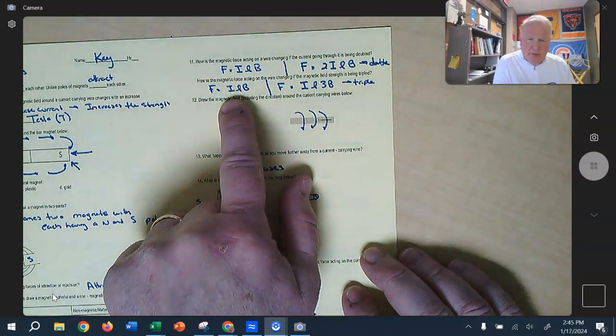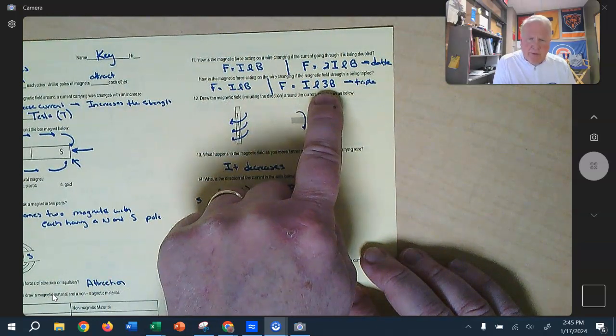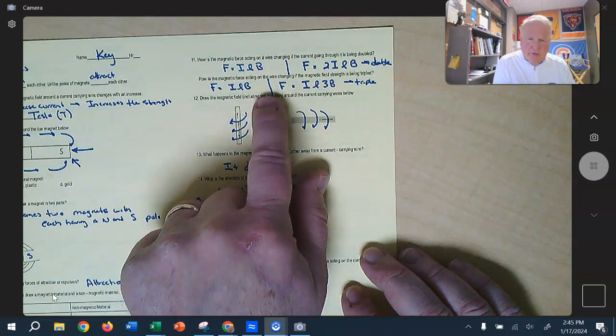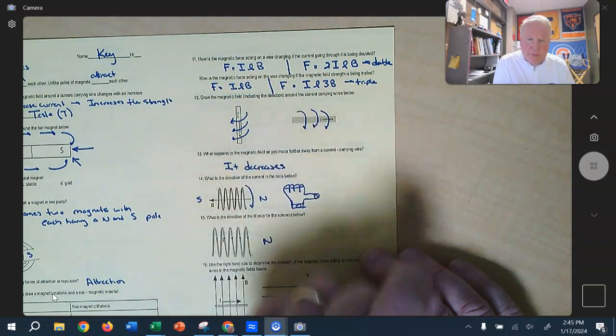And then the same thing here, when they triple the magnetic field, the only thing that's different between this original equation and this one is that three, so there's going to be three times the force, so it'll be triple.